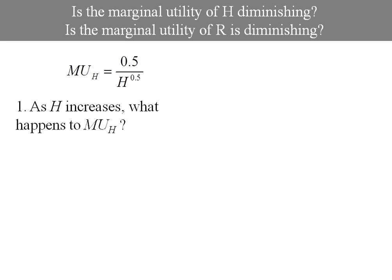Here's my marginal utility function, and I like to do this with arrows. So I'm increasing H, so my denominator's getting larger, which means my whole expression is getting smaller. So yes, we do have diminishing marginal utility in good H.